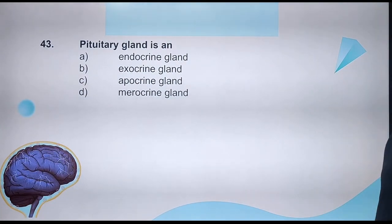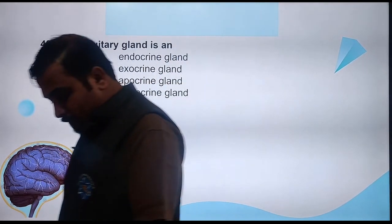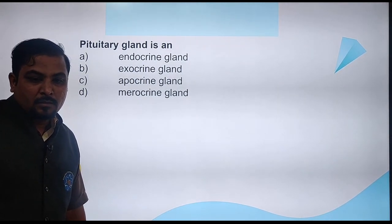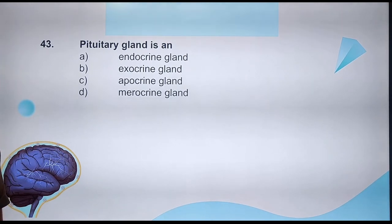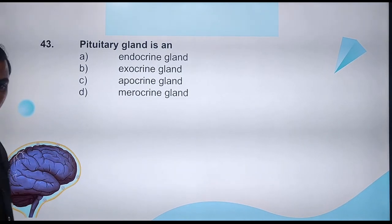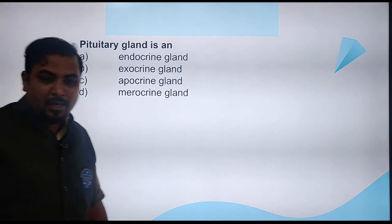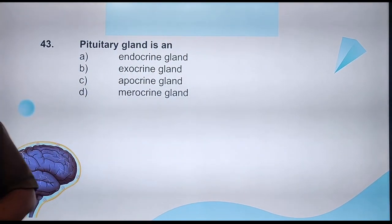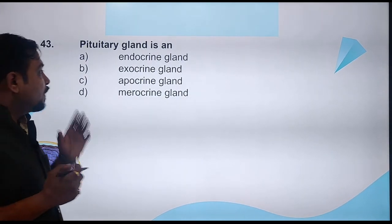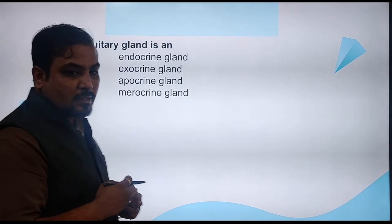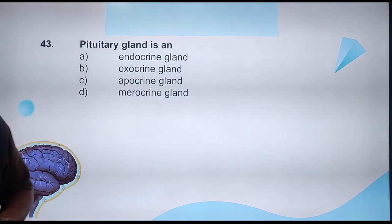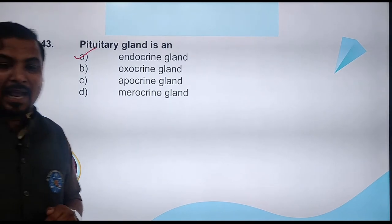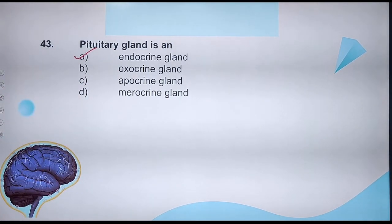Question 43: Pituitary gland is which type — endocrine, exocrine, apocrine, or merocrine? Forget apocrine and merocrine — the answer is either endocrine or exocrine. Pituitary is an endocrine gland. Right answer for question 43 is option A.